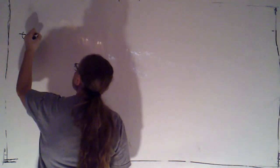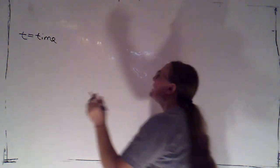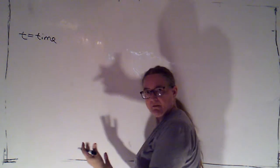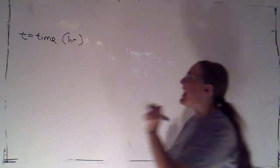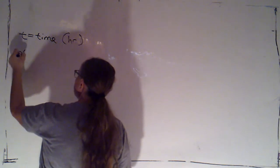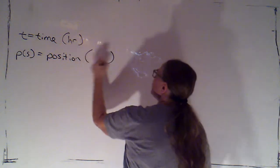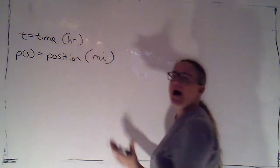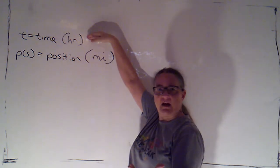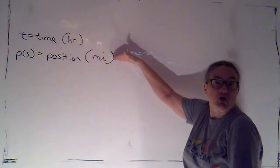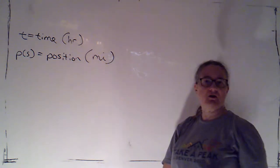We're going to have t, which is our time — let's say we're measuring that in hours. And then p of t is going to be our position, and let's say the units we're using for that are miles. I could use any unit of time; often we'll measure time in seconds and position in meters. But here I'm going to measure time in hours and position in miles.